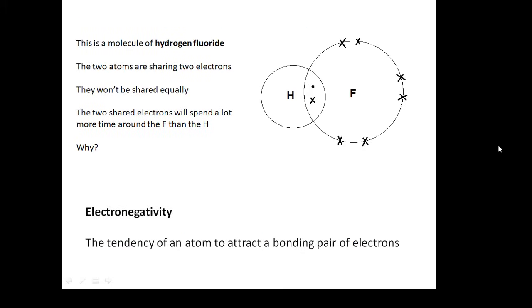Look at this. This is a hydrogen fluoride molecule. So you've got a hydrogen atom and a fluorine atom. And they're sharing a couple of electrons. But they're not going to share them equally. The fluorine is going to get a bigger share of these electrons. If you like, the electrons are going to spend a lot more time hanging around the fluorine atom than they are the hydrogen atom.